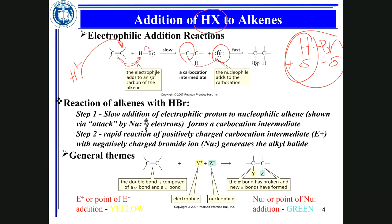Now you have your product. The product is an alkyl halide because you added hydrogen and Br. Hydrogen doesn't count as a functional group, but Br does. So you convert your alkene to an alkyl halide as the final product. The electrophile comes in first, then the nucleophilic attack.